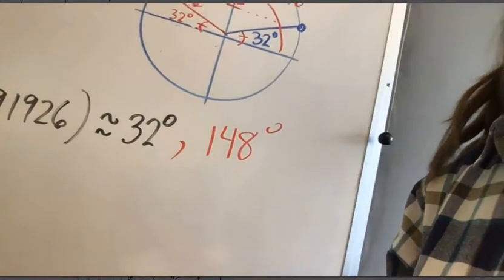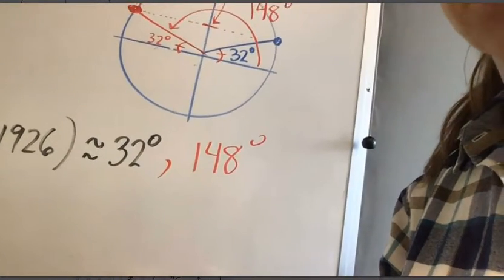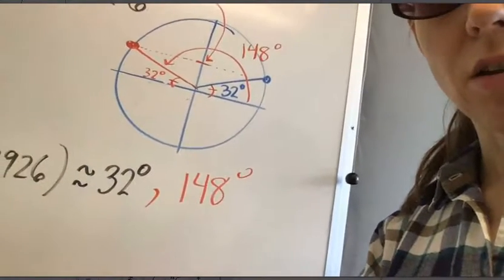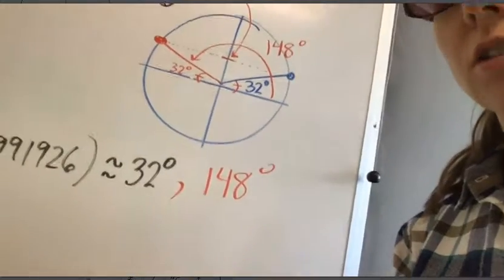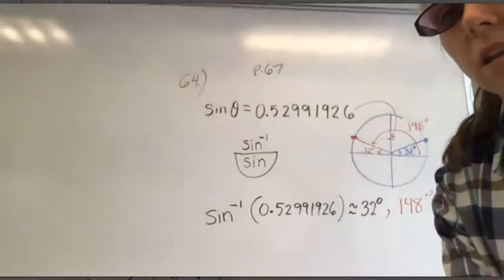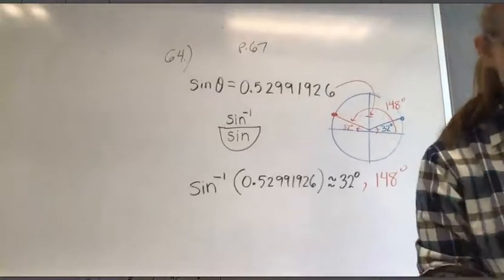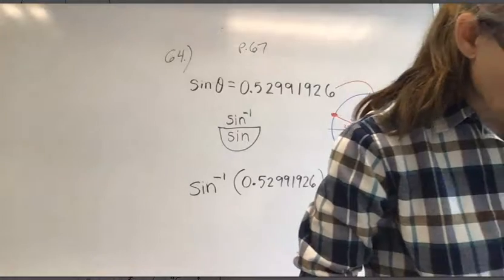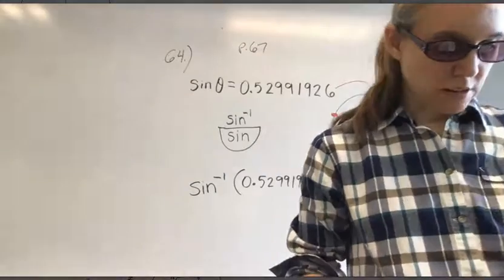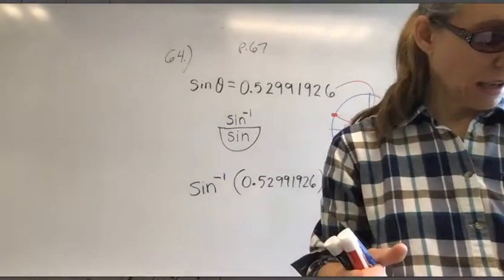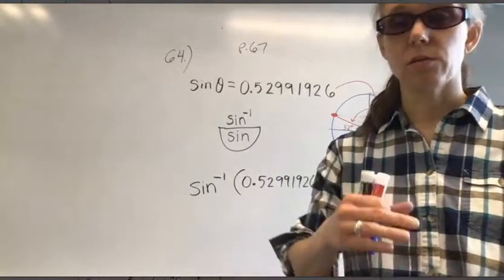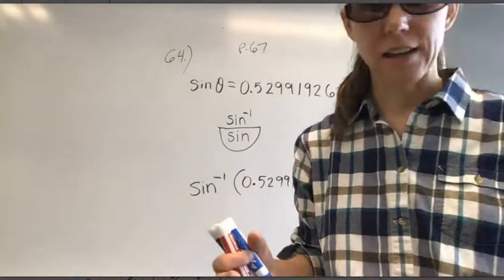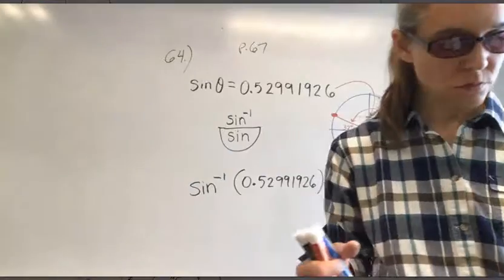To find the second answer, look at the circle. Sine corresponds to y-values. At 32 degrees the y-value is 0.5299. Another point on the circle has the same y-value — by symmetry it's in the second quadrant. That reference angle is also 32 degrees, and the full angle is 180 minus 32 equals 148 degrees. So both 32 degrees and 148 degrees are the answers. We'll continue exploring this concept before the test.